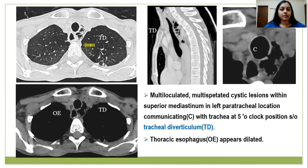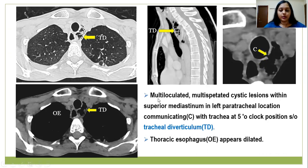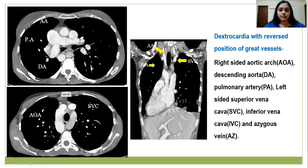Another interesting finding was that of multi-loculated, multi-septated cystic lesions within the superior mediastinum in the left paratracheal location. There is a communication seen at the five o'clock position with the trachea, suggestive of tracheal diverticulum. Another finding was that of a dilated thoracic esophagus.